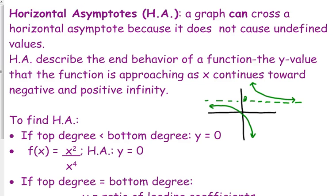First thing that I want to tell you, and you want to remember this, is that technically a graph can cross a horizontal asymptote because horizontal asymptotes do not cross undefined values, which will make more sense when we talk about holes and vertical asymptotes.